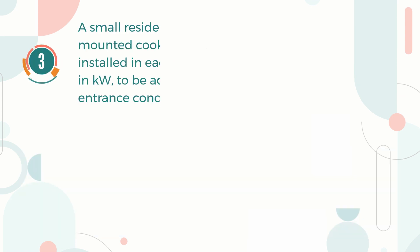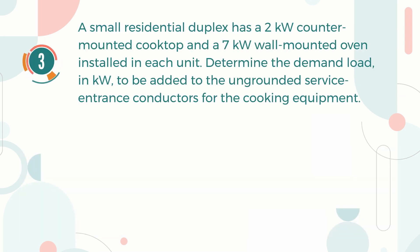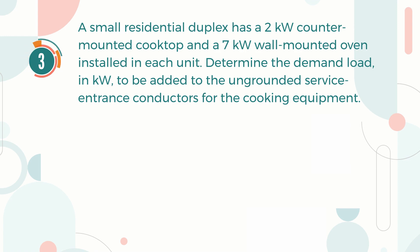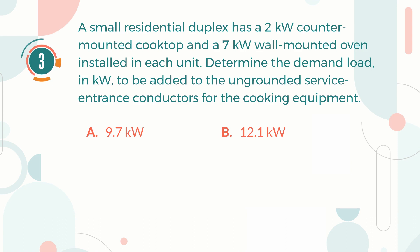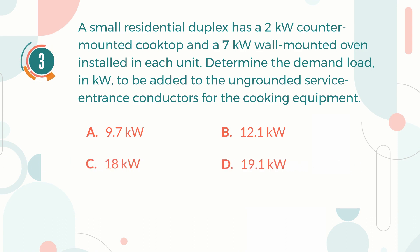Number 3. A small residential duplex has a 2 kW counter-mounted cooktop and a 7 kW wall-mounted oven installed in each unit. Determine the demand load in kW to be added to the ungrounded service entrance conductors for the cooking equipment. A. 9.7 kW. B. 12.1 kW. C. 18 kW. D. 19.1 kW.